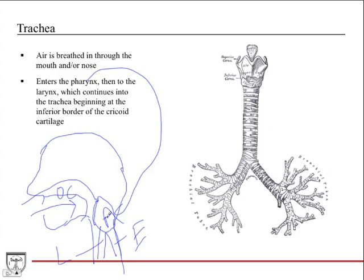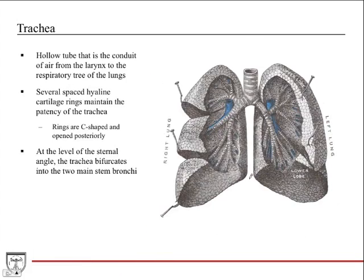So air comes in through the oral cavity or nasal cavity, goes into the pharynx, enters the larynx, and then the larynx terminates into what's called the trachea. Here's the terminal portion of the larynx, the laryngeal cartilage, and then the trachea, which begins at the inferior border of the cricoid cartilage and terminates at the level of the lungs into the right and left main bronchi. The trachea is a hollow tube that serves as the conduit for air going from the larynx to the respiratory tree of the lungs.